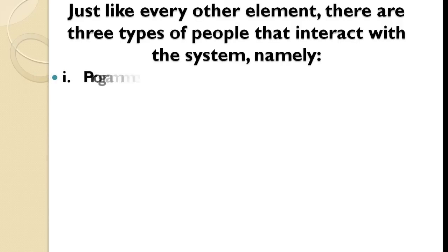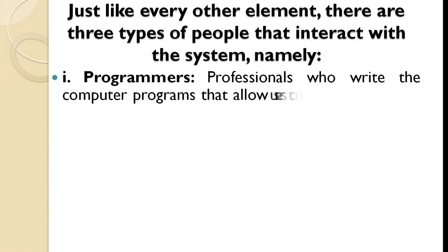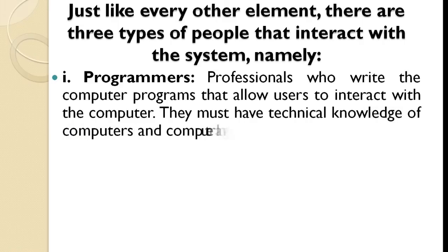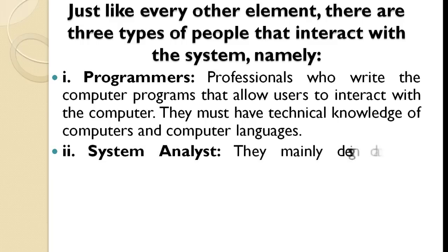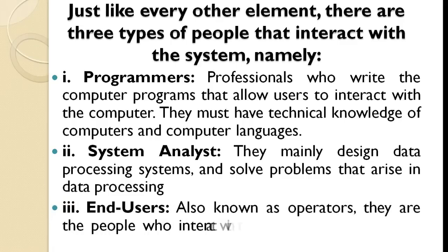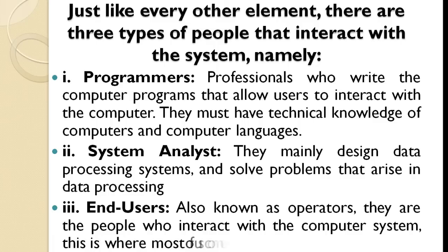1. Programmers — professionals who write the computer programs that allow users to interact with the computer. They must have technical knowledge of computers and computer languages. 2. System Analyst — they mainly design data processing systems and solve problems that arise in data processing. 3. End Users — also known as operators, they are the people who interact with the computer system. This is where most of us come in. Hope this is well understood. If yes, then let's move to the types of computer.